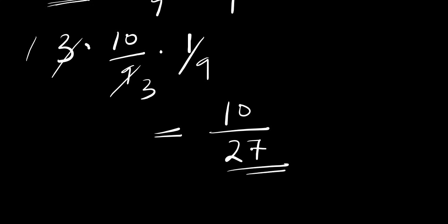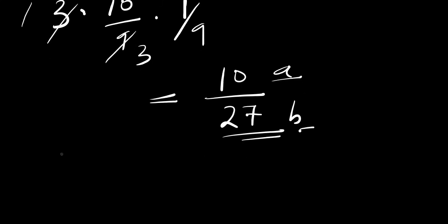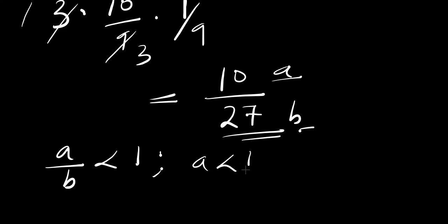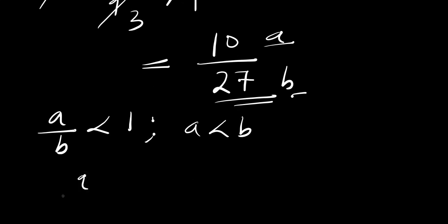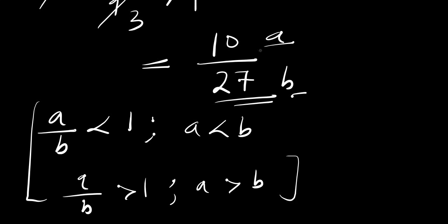We now have 10 divided by 27. Remember we were dividing a by b. So this is our a divided by b. Since 10 is obviously less than 27, a divided by b gives a number less than 1. By our analogy, if a/b is less than 1, then a is less than b. So a is less than b.